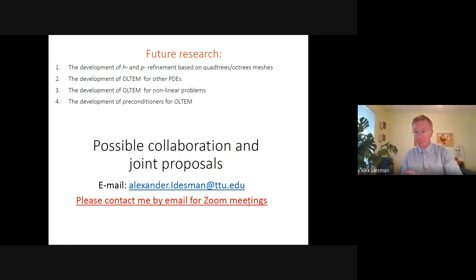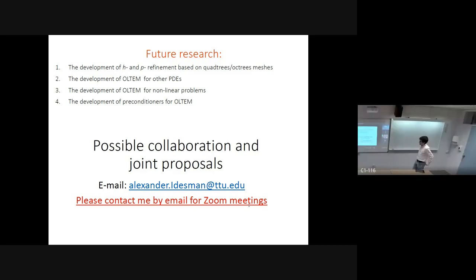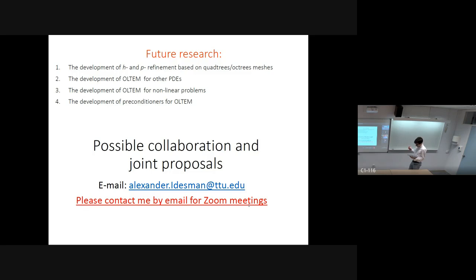Thank you for your attention. Thank you very much, Dr. Idesman, for the presentation. We have time for maybe a couple of short questions if anybody wants to ask. I have a couple. You talk about a local system of algebraic equations that you solve in order to obtain the stencil coefficients for points that are close to the boundaries. What is the computational cost of this solution of the local system of algebraic equations compared to the solution of the whole problem?